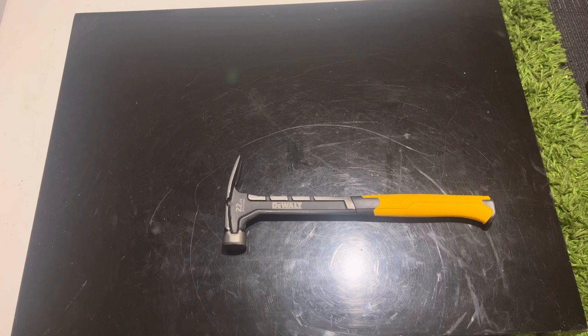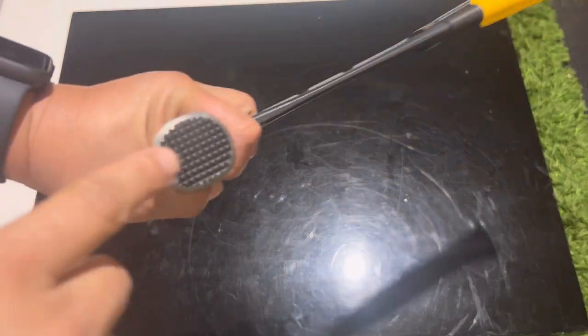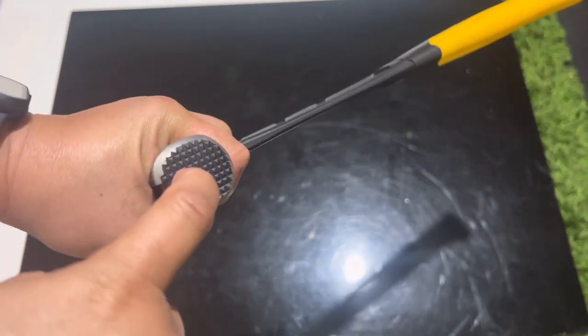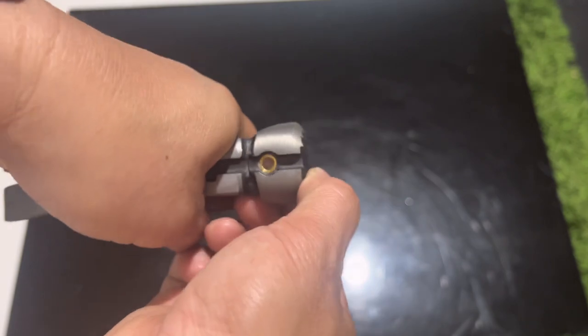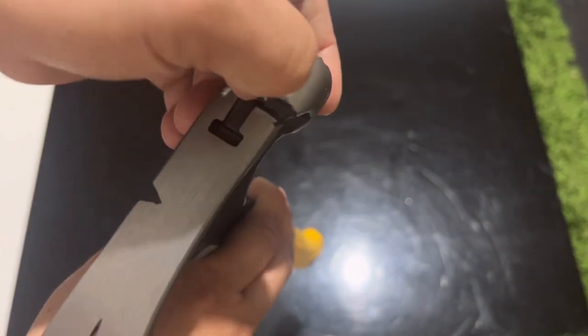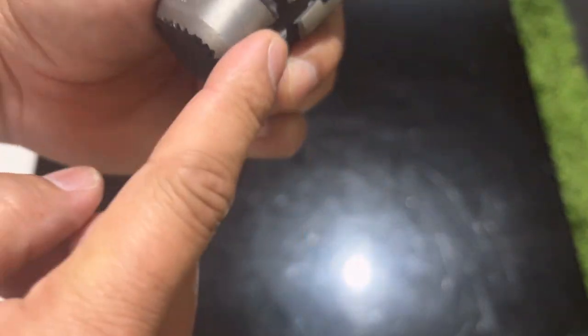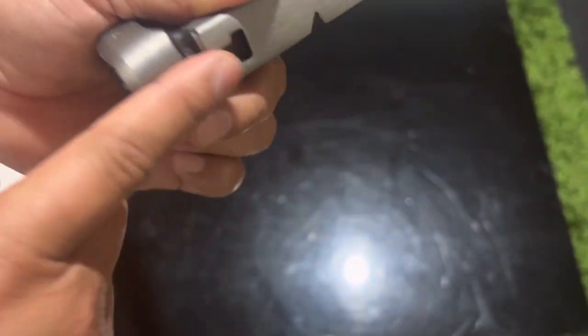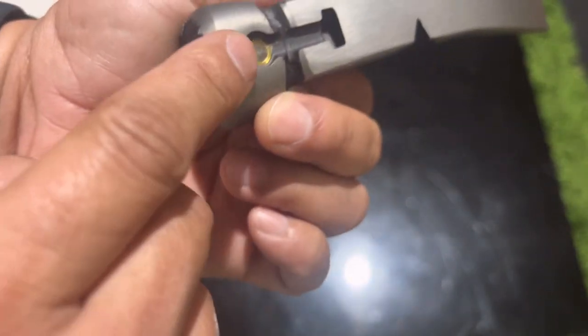There is a groove there for anti-slip. There's also a claw for when the nail is stuck and you need to pull it out. That's the purpose of the claw.